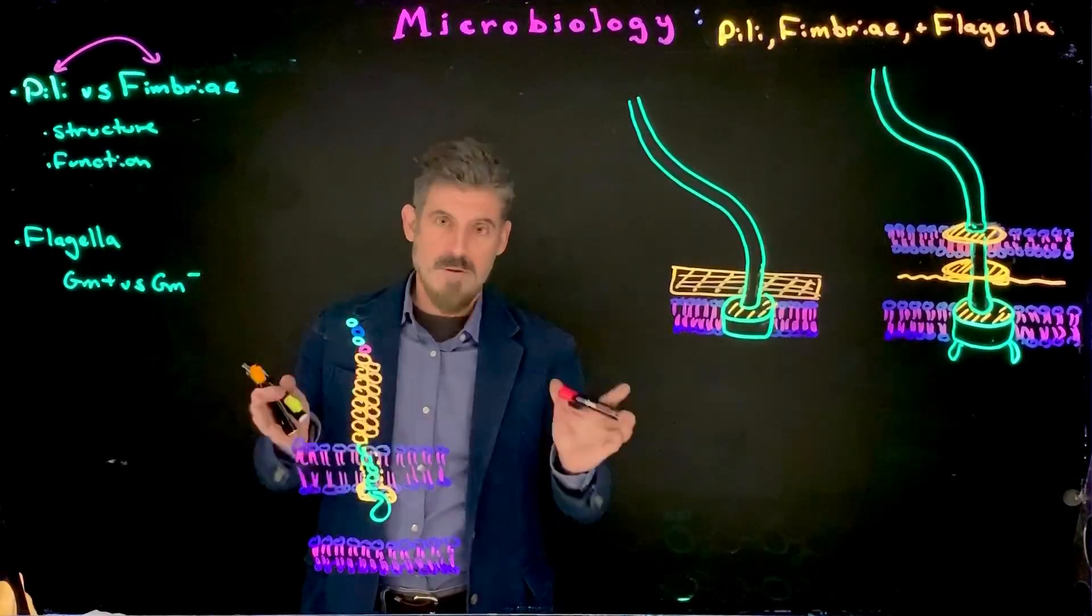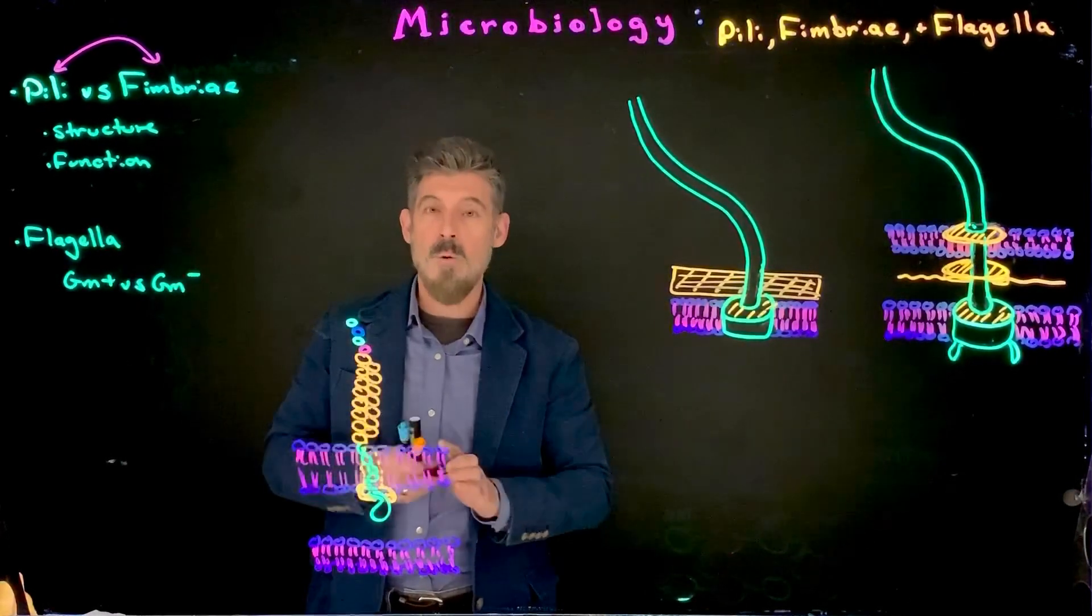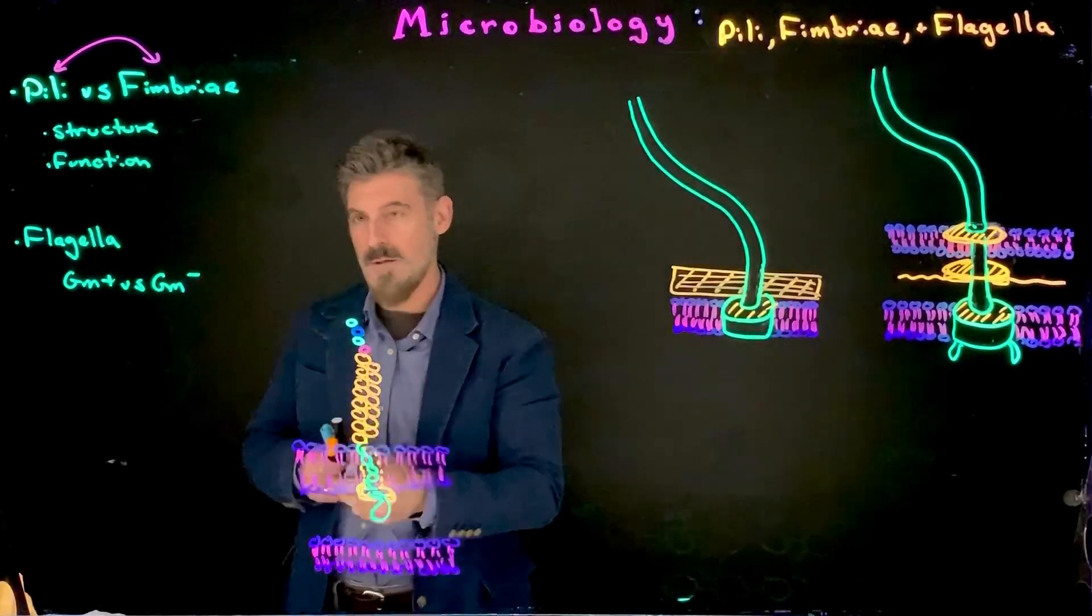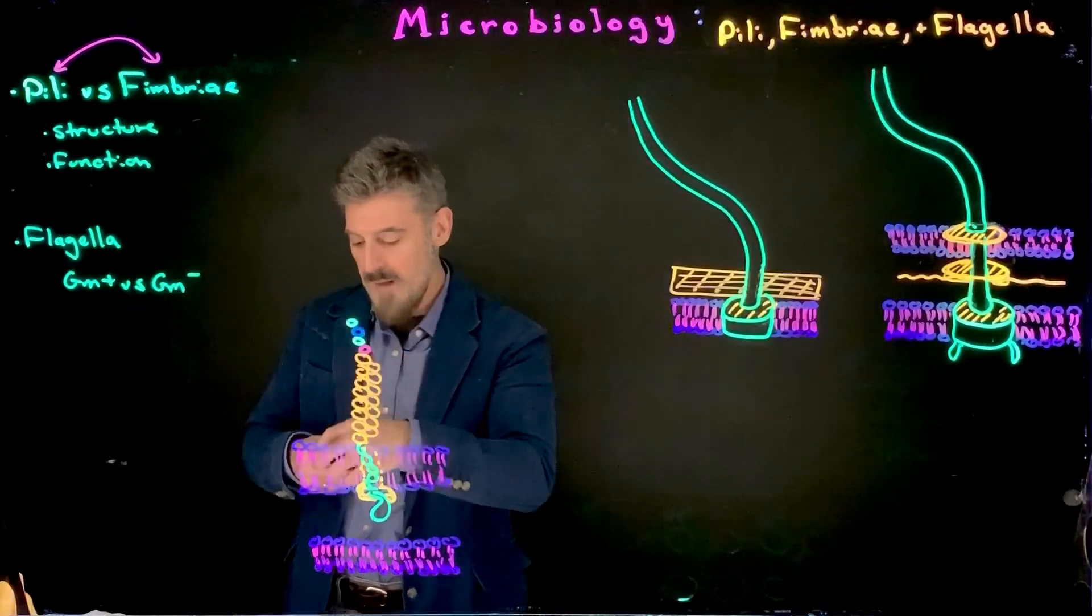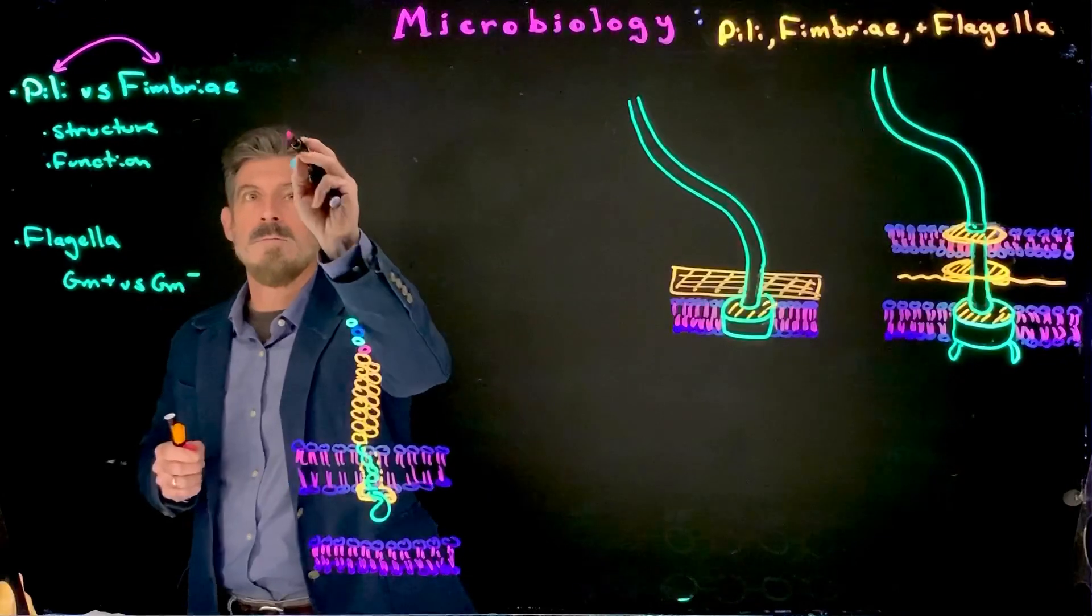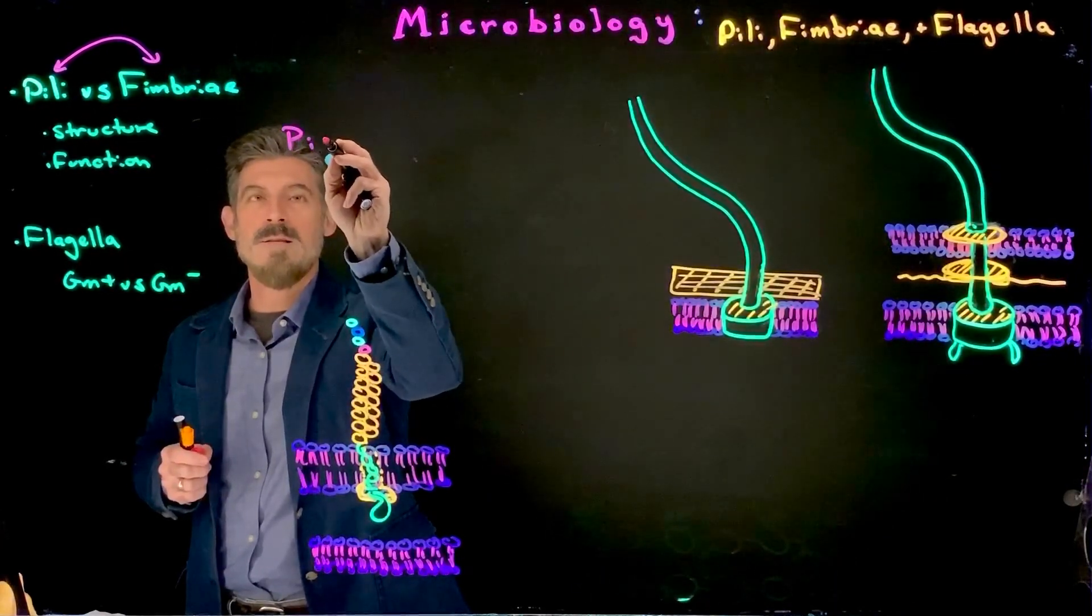In general, they're interchangeable. You could use one or the other for most of the structures that we're going to talk about here. These are going to be the fimbriae and pili. But there are going to be certain cases where only one is used.